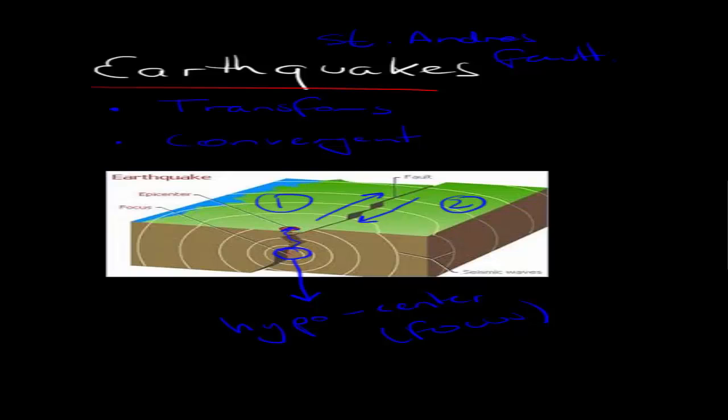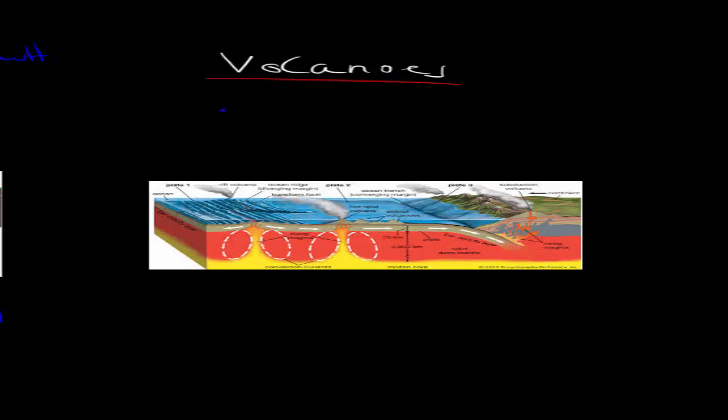Now volcanoes occur usually at converging boundaries, but they also can occur at diverging boundaries. Now what happens, remember subduction happens at converging boundaries when the oceanic plate—so this here is the oceanic plate—subducts, goes under the continental, this is the continental plate. So it's actually going underneath that plate.